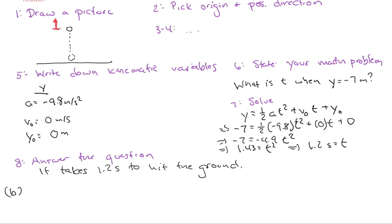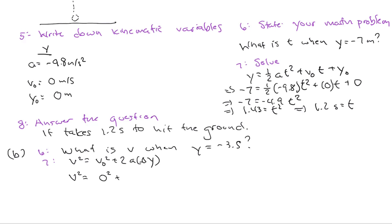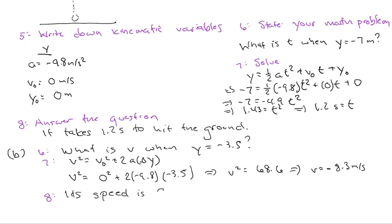In part B, I'm asking what is the speed when the ball is halfway to the ground. I've already done the setup in steps one through five, so I just need to ask the correct question: what is v when y equals negative 3.5 meters? The most appropriate equation is v squared equals v-naught squared plus 2a delta-y, since there is no explicit dependence on time. Plugging in values gives 8.3, but since the object is going downwards I take the negative root, and the speed — the absolute value — is 8.3 meters per second.